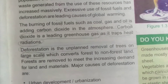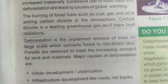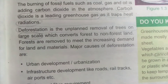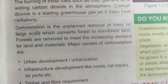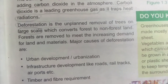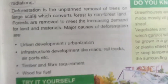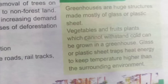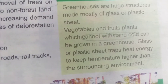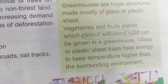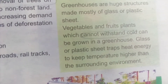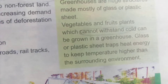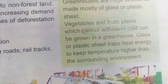Greenhouse gases and deforestation — deforestation is the uncontrolled removal of trees on a large scale. Plants which cannot withstand cold, and fruits and vegetables, can be grown in a greenhouse.